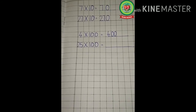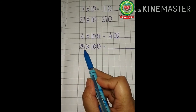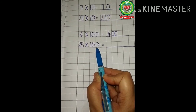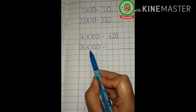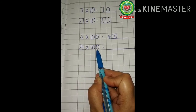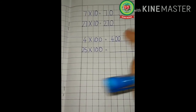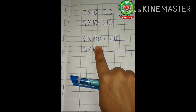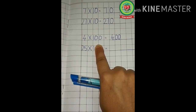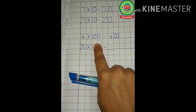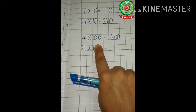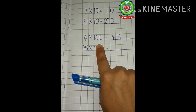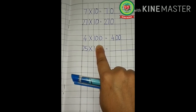Read the question aloud with me: 25 multiplied by 100. What is the question? 25 multiplied by 100. Again two zeros are there. Hide the two zeros with your finger. Now what is left — what can you see? 25 multiplied by 1. Now 25 ones: anything multiplied by 1 is the same number. So 25 ones are 25.